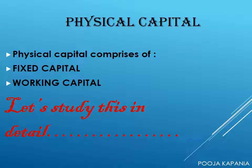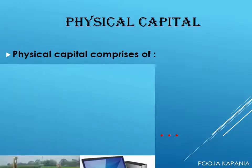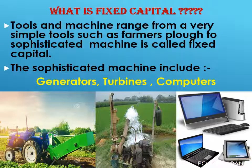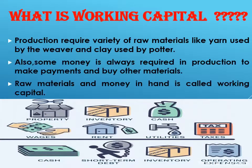The third requirement is physical capital — the variety of inputs required at every stage during production. Physical capital comprises fixed capital and working capital. Fixed capital includes tools, machines and buildings. Tools and machines may range from very simple tools such as a farmer's plough to more sophisticated machines such as generators, turbines, computers etc. Tools, machines and buildings can be used in production over many years, which is why it is called fixed capital.